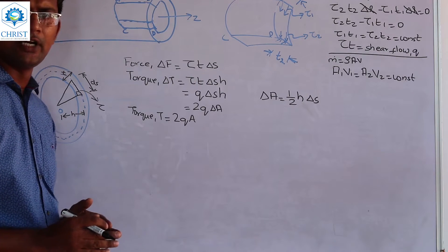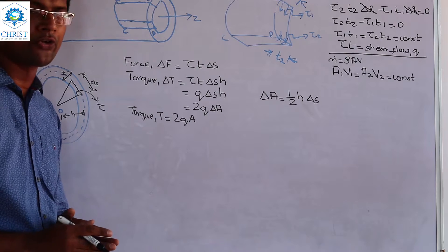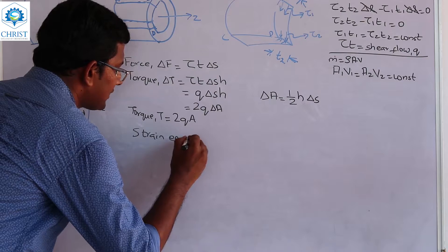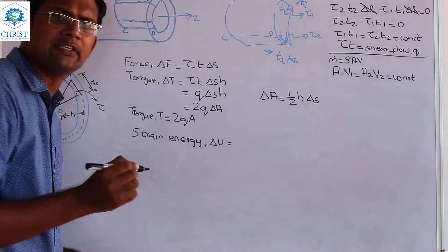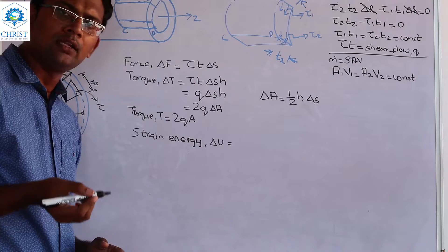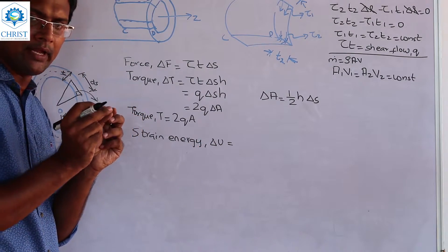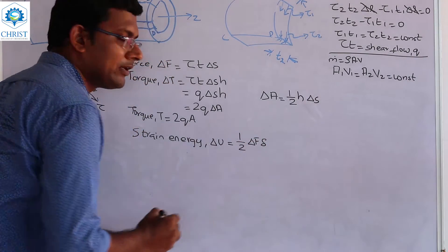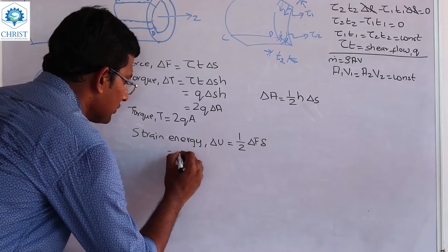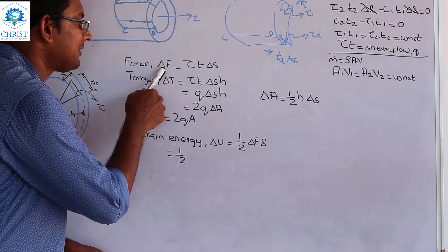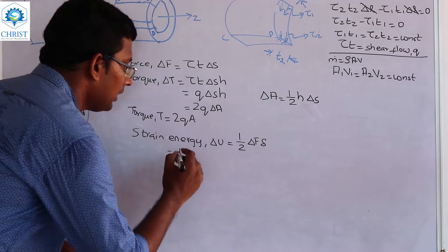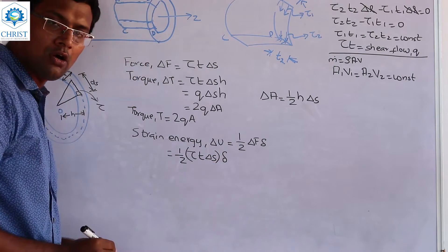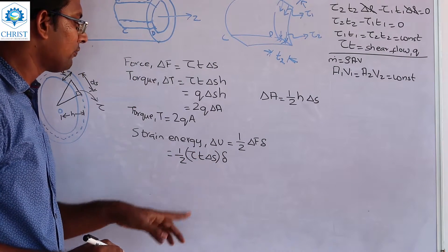Now we will talk about strain energy. Strain energy is the expression from the last module — the fourth module. The strain energy of the small component delta U is equal to half into delta F into delta. Delta F is equal to tau into delta S. The deformation delta is equal to gamma into delta L.